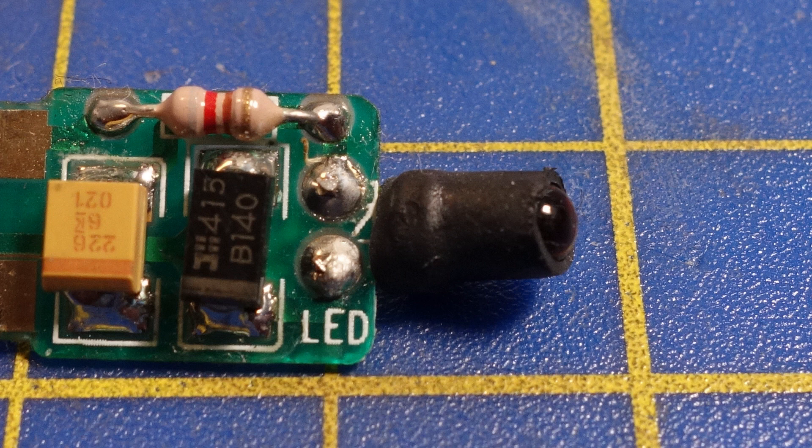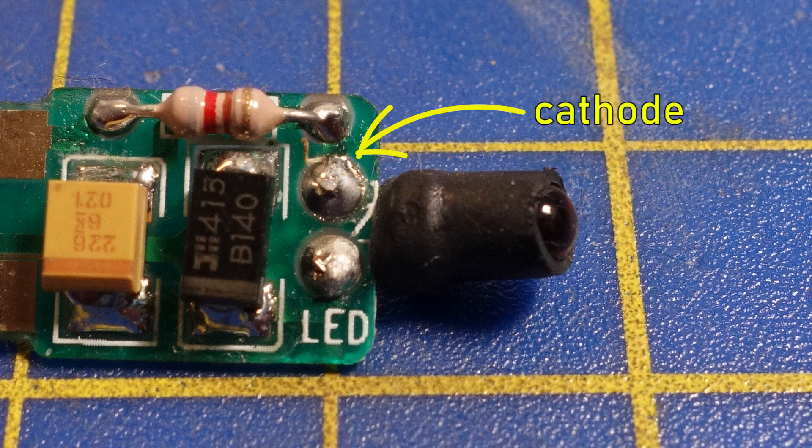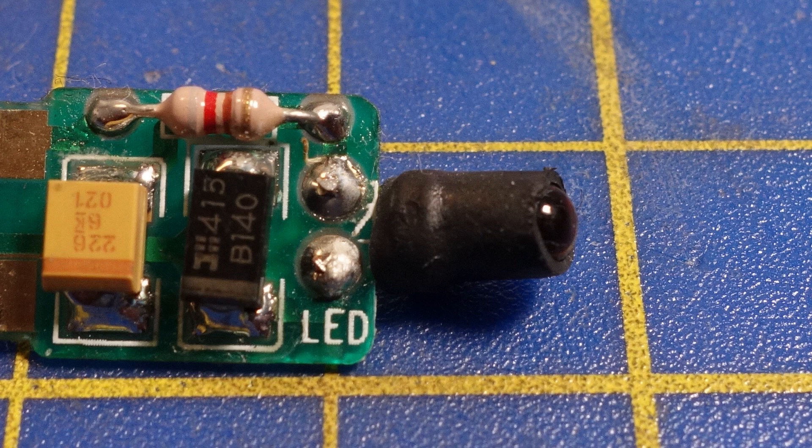The LED for the front headlight is wrapped in shrink tubing, making it harder to tell which lead is the cathode. But since the LEDs are set up to use track polarity to steer the directional lighting on DC, the polarity has to be the opposite of the polarity of the rear light LED.